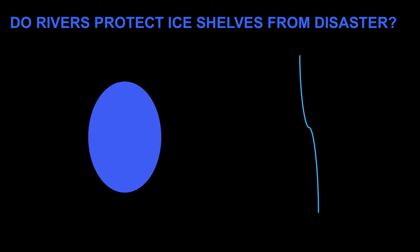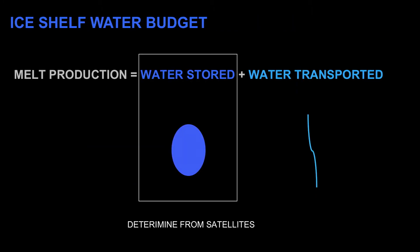These two observations lead to the question: can rivers, by removing water, protect ice shelves from breaking apart? I'm really interested in how the spatial pattern of water on the top of ice shelves can affect their behavior. I think about this in terms of a total budget: the amount of water melted should equal the amount stored versus the amount removed.